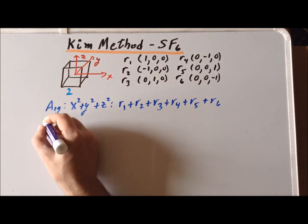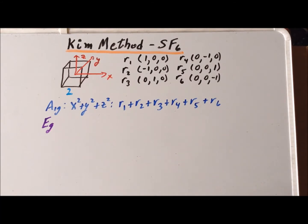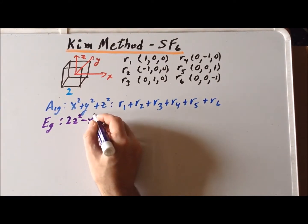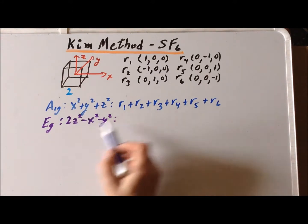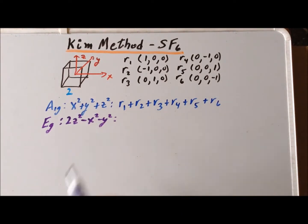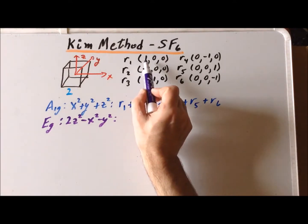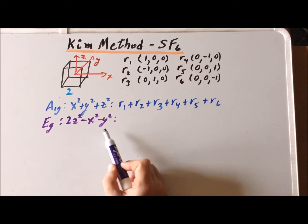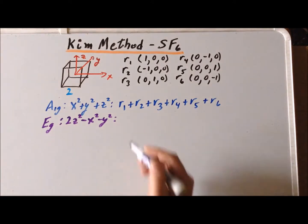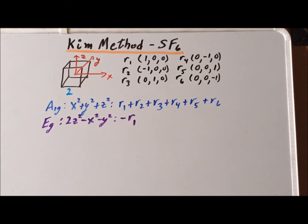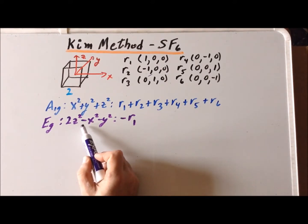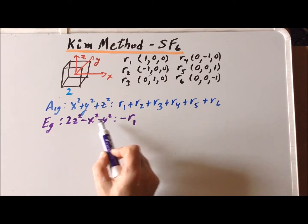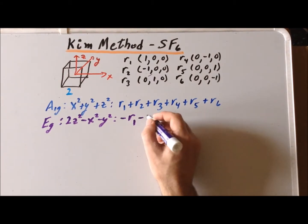The next stretching motions have Eg symmetry, and Eg is a doubly degenerate irreducible representation. For the first basis function, 2z²-x²-y², we evaluate it at each of the six points. For R1, x=1, y=0, z=0, giving a value of -1. For R2, x=-1, squaring gives +1, multiplied by -1 gives -1. So we have -R1 and -R2. For R3, y=1 and the basis function gives -1, so we have -R3.